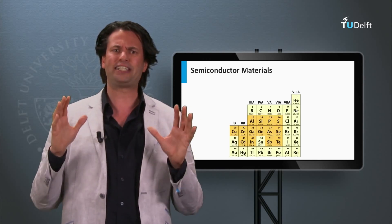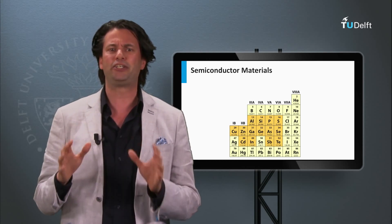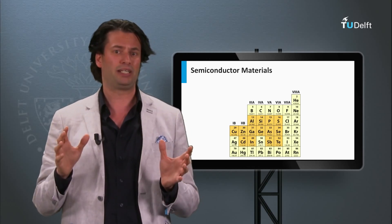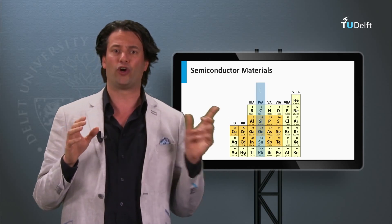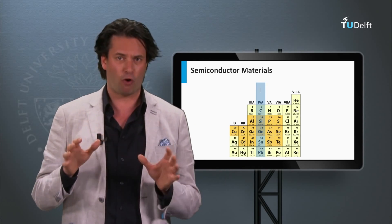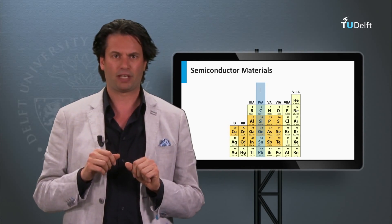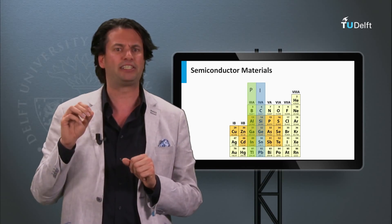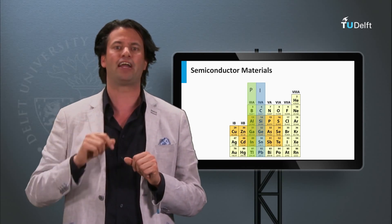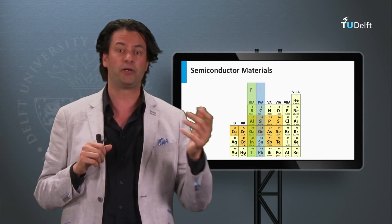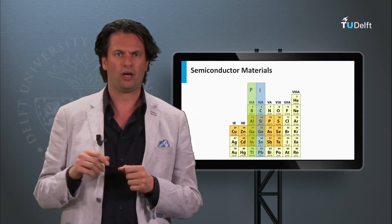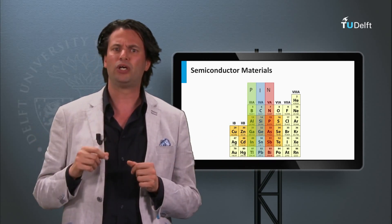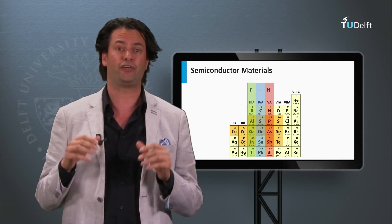As an example we take silicon again. Silicon is a material which has 4 valence electrons. In the periodic table, silicon is part of the column with atoms having only 4 valence electrons. At the left side of this column we have materials with only 3 valence electrons like boron, aluminum, and gallium. On the right side of silicon in the periodic table we have atoms which have 5 valence electrons, like nitrogen and phosphorus.